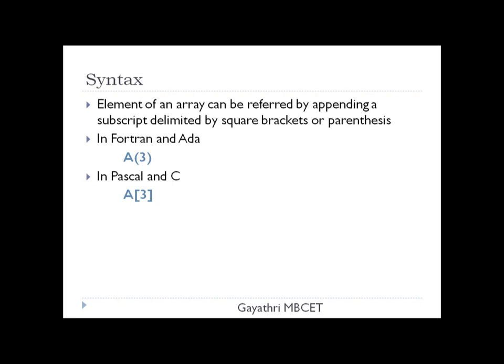An element of an array can be accessed using a subscript operator, which is delimited by square brackets or parentheses. It depends on the language. In Fortran and Ada, we use parentheses — that is, normal brackets — so a(3) where a is the name of the array and 3 is the index position. In Pascal and C, we use square brackets, so a[3], where 3 is the position from where to fetch the element.